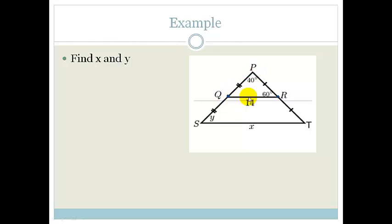Therefore, by the Midpoint Theorem we can say that QR is parallel to ST and that QR is half of ST, so therefore we can say that ST is equal to 2 times QR, and it's by the Midpoint Theorem.